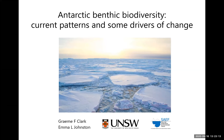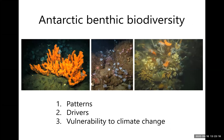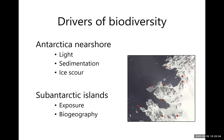Predominantly we study Antarctic benthic biodiversity, which is the organisms living on the sea floor. We're mainly interested in finding patterns in these organisms and discovering what drives these patterns and consequently what is their vulnerability to climate change. Some of the main drivers we've looked at so far around the near-shore environment in Antarctica are light, sedimentation, and ice scour. We've also done some work in the sub-Antarctics where communities seem to be driven mostly by exposure to conditions and their biogeography. We're interested in exploring this further within SAFE.